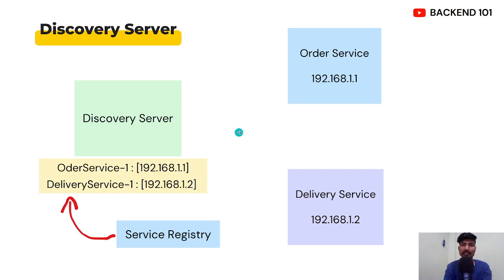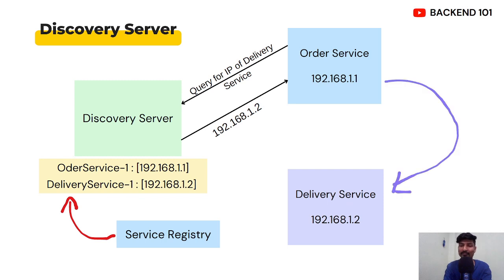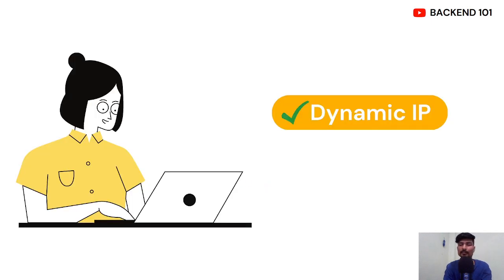With the discovery server in the picture, order service would first ask the discovery server for the IP address of delivery service. The discovery server returns the IP address from the service registry. After getting the IP address, the order service communicates with delivery service. No matter if the IP address of delivery service changes, delivery service updates the service registry maintained by the discovery server, so order service always gets the updated IP. This decoupling solves the problem of dynamic IP.